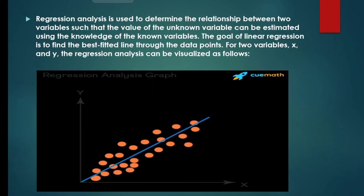Regression analysis is used to determine the relationship between two variables such that the value of the unknown variable can be estimated using the knowledge of the known variables. The goal of linear regression is to find the best fitted line through the data points. For two variables X and Y, the regression analysis can be visualized as follows. This is the graph of the regression analysis.